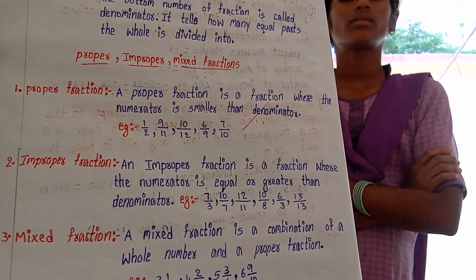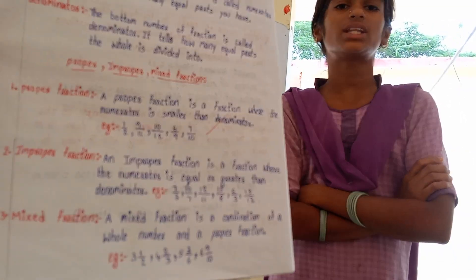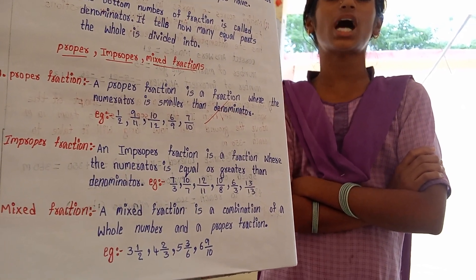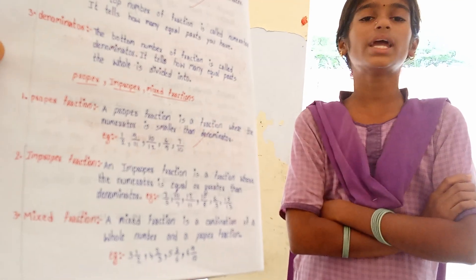Define the proper fraction. A proper fraction is a fraction where the numerator is smaller than the denominator. Example: 3/7, 8/12.